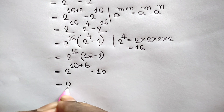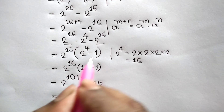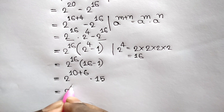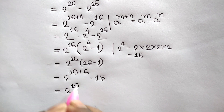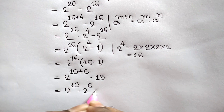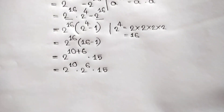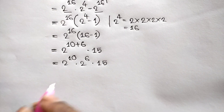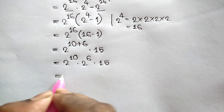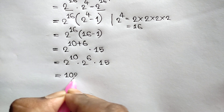Now 2 to the power 16 can be written as 2 to the power 10 plus 6. Applying the same rule, we get 2 to the power 10 times 2 to the power 6 times 15. Now, 2 to the power 10 is 1024.